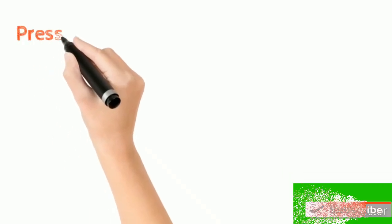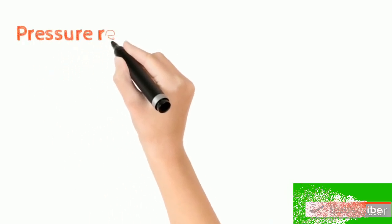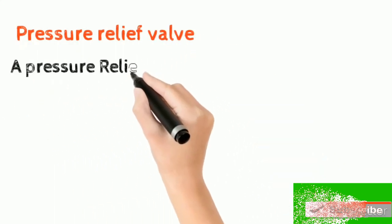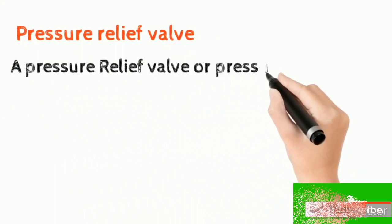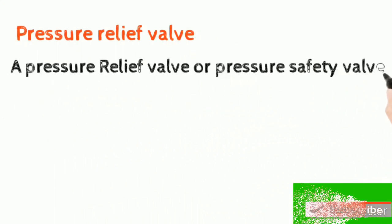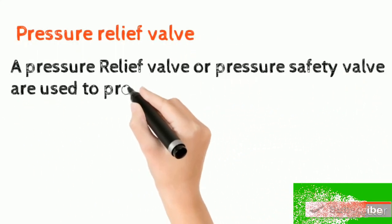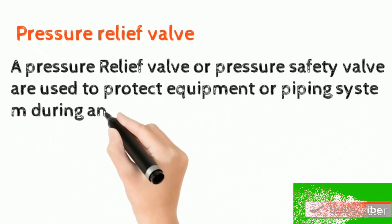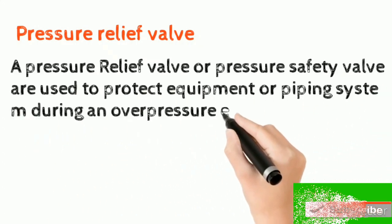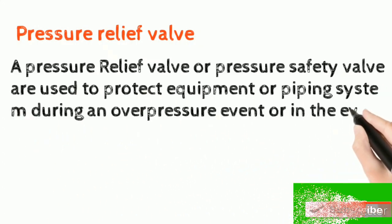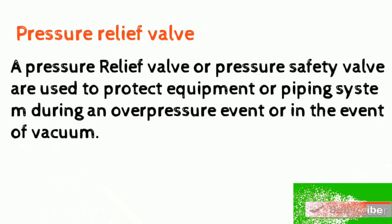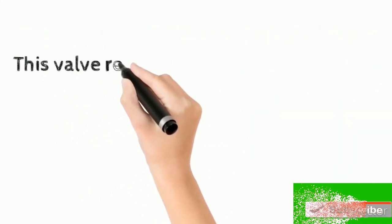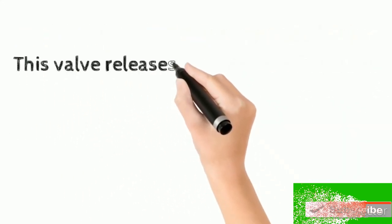A pressure relief valve or pressure safety valve is used to protect equipment or piping systems during an overpressure event or in the event of vacuum. This valve releases the pressure or vacuum at a predefined set pressure.